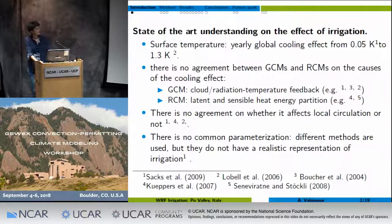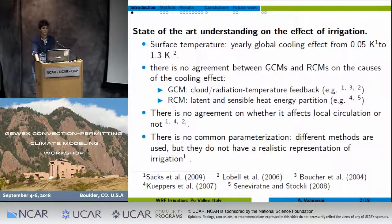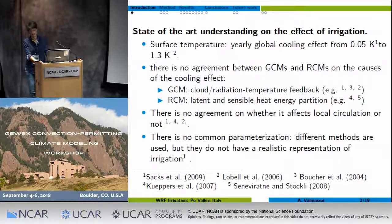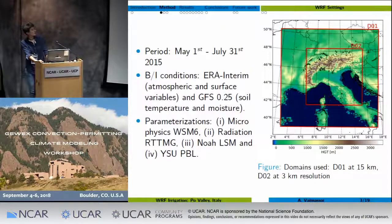Let's go deeper into the scaling effect. There is no agreement on what causes the cooling impact of irrigation between a GCM and RCM. GCMs found that the cloud irradiation feedback is the driver of the cooling impact, while RCMs find that there is a difference in energy partitioning at the surface. Moreover, there is no clear understanding whether irrigation has an impact on local circulation, and there is no common parametrization of irrigation within the models. Most GCMs have an over-representation of irrigation, which causes a water request a hundred times more than what would be available water-wide.